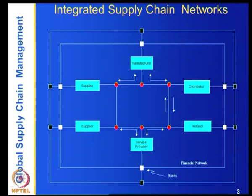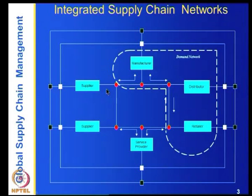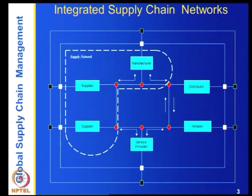This kind of integrated supply chain network has three sub-networks. The first is the demand network, which connects manufacturers to distributors and retailers. Depending on customer demand, retailers order from distributors, and distributors order from manufacturers — this is called the distribution and retail process. The second is the supply network, where suppliers and manufacturers are connected.